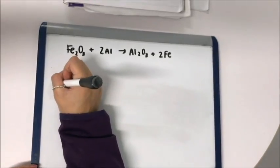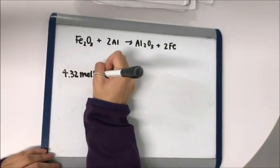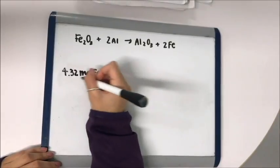Using the equation above, we're going to figure out how many grams of Fe2O3 are required to produce 4.32 moles of Fe.